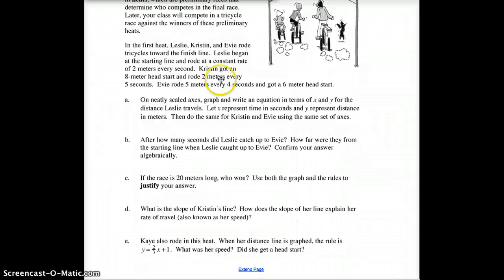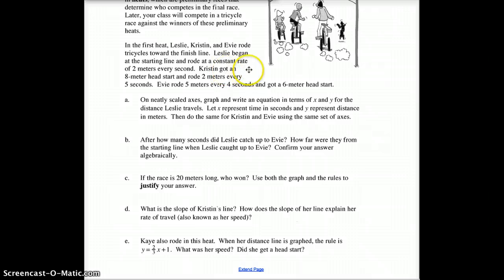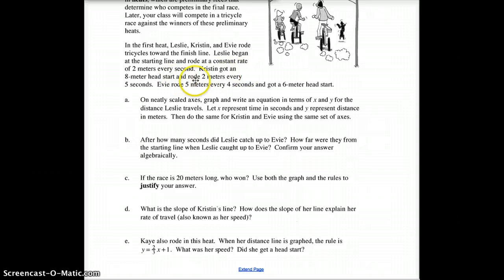Kristen got an 8-meter head start. How would you put an 8-meter head start on your graph? Hopefully you didn't put the head start on the x-axis, but rather on the y. Then she rode 2 meters every 5 seconds. I'd like you to graph her out—2 meters every 5 seconds, what her graph looks like.